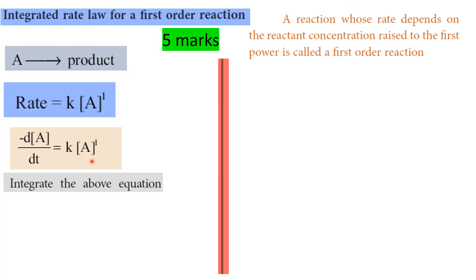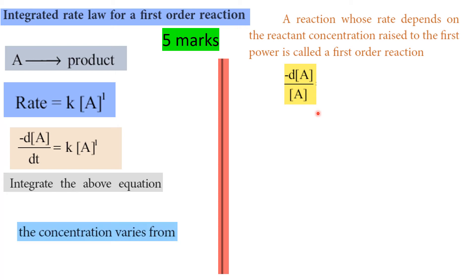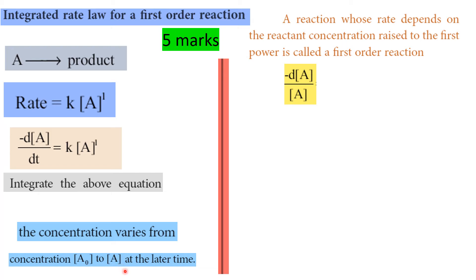Let's do the integration of the above equation. Separating variables: minus dA divided by A concentration. The concentration limit varies from lower limit A0 to upper limit A, and the time limit varies from lower limit 0 to upper limit t. This area gives k.